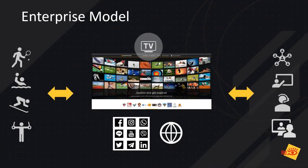The enterprise model's core element is a Dartfish TV channel that connects all parties — athletes, coaches, and staff. National governing bodies, pro teams, colleges, academies, and even high schools would use this many-to-many model. Athletes can consume educational content and also upload their own performance footage for analysis. In addition to sharing analyses with athletes, coaches can access other content on the channel. The channel has many other attributes, like the ability to monetize content, integrate with third-party websites, connect to reporting APIs, and a whole lot more.